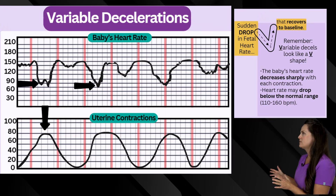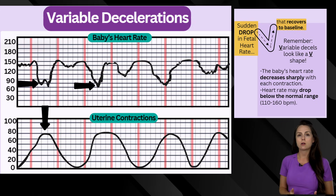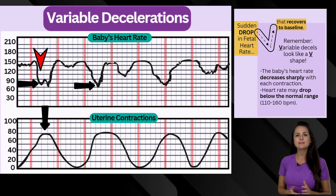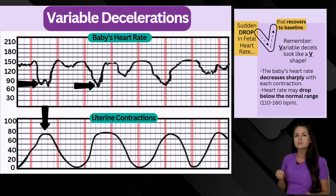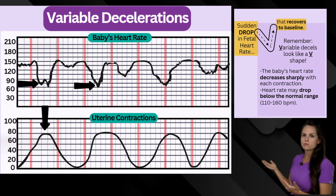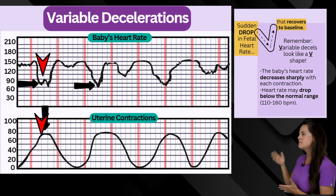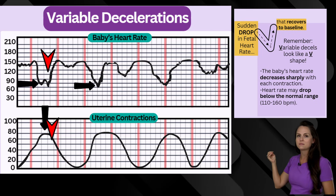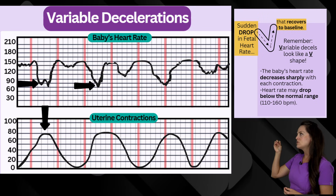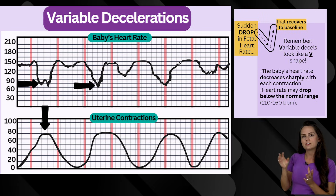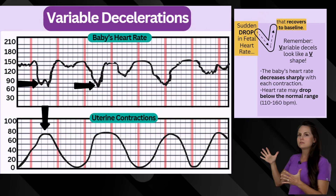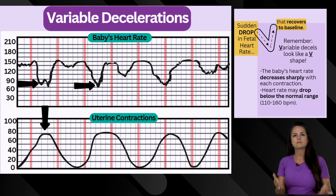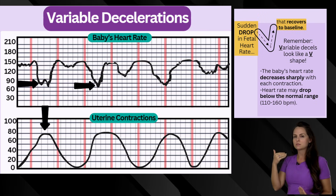Then there are variable decelerations. This is where we have sudden sharp drops in the fetal heart rate, going less than 110 beats per minute, and eventually it will try to recover to baseline. When mom's contraction happens, that heart rate drops sharply and as it tries to increase, it creates a V or U shape pattern. That's how I remember this — variable deceleration starts with V, and when the baby's heart rate drops so suddenly it creates these V-like shapes.